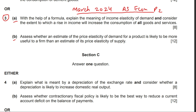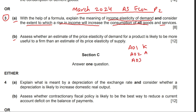With the help of a formula, explain the meanings of income elasticity of demand, and consider the extent to which a rise in income will increase the consumption of all goods and services. You have to accomplish three assessment objectives: AO1 is knowledge, AO2 is analysis, and AO3 is evaluation. AO1 carries three marks, AO2 carries three marks, and AO3 carries two marks.